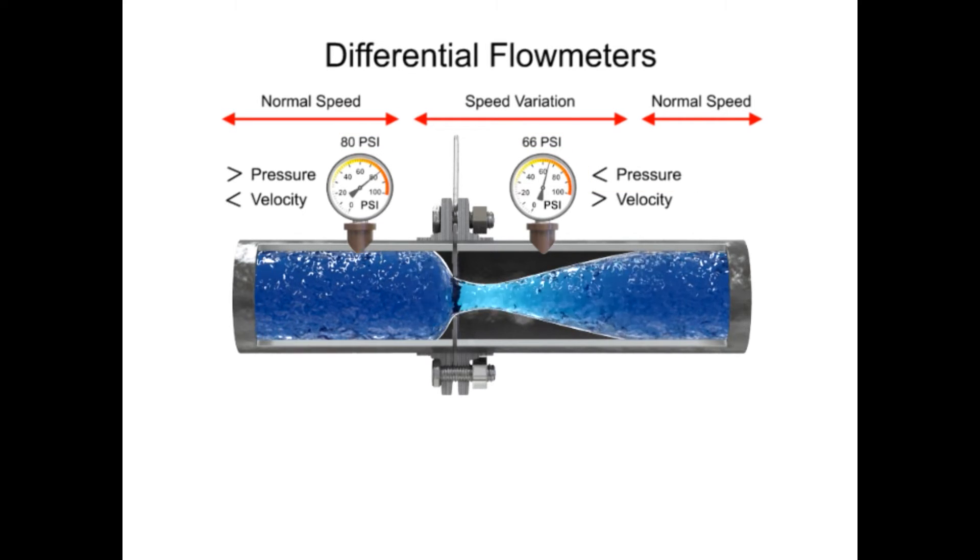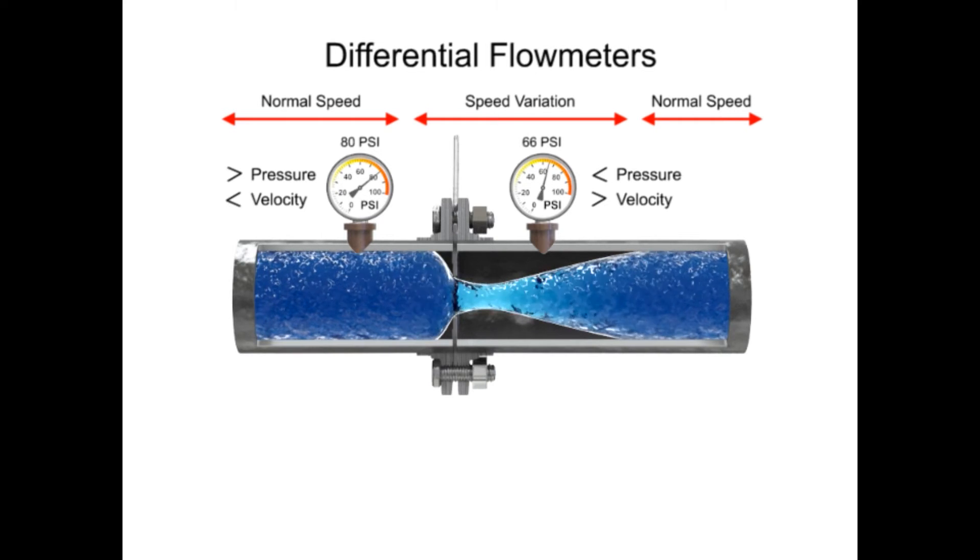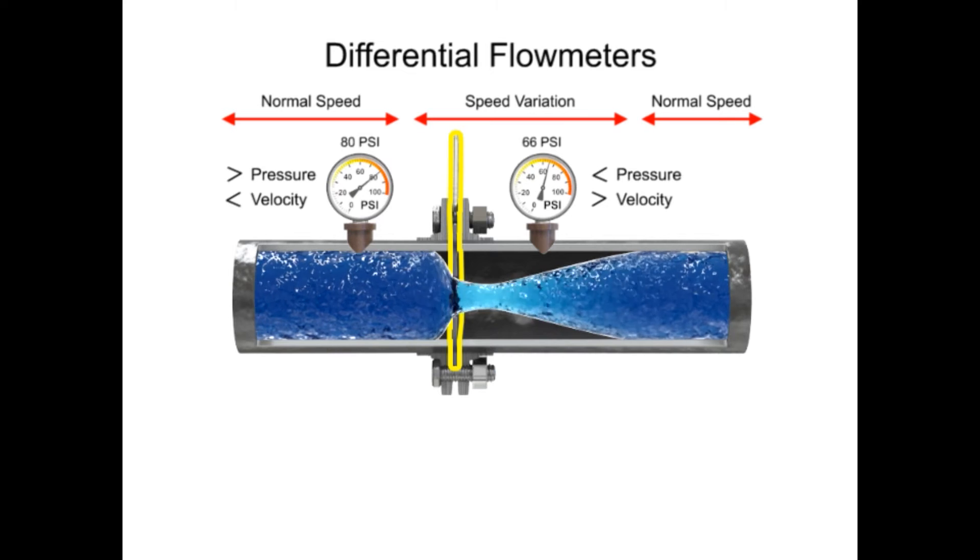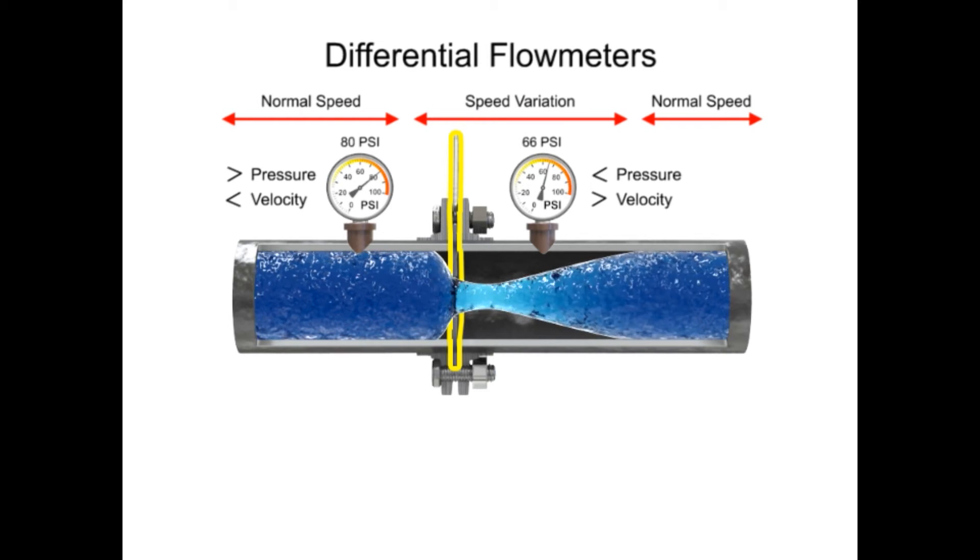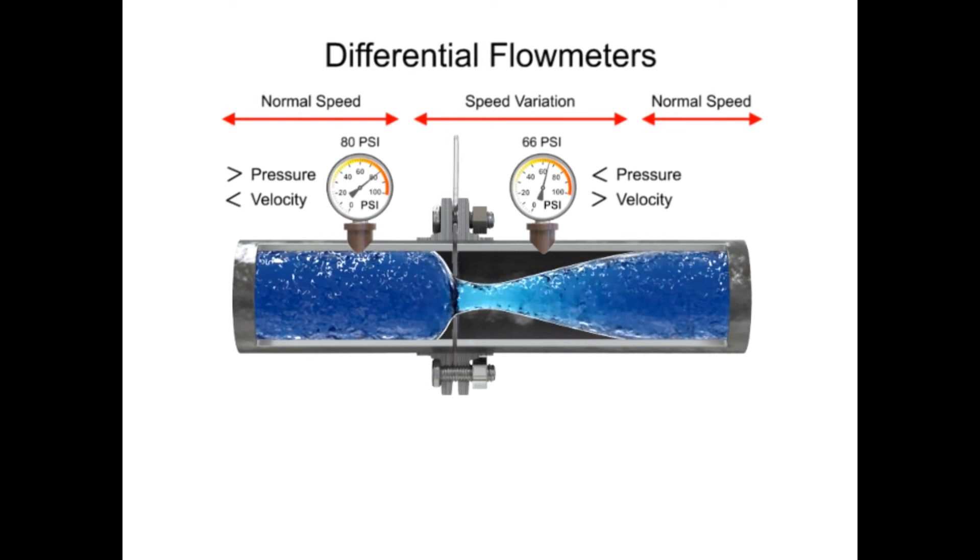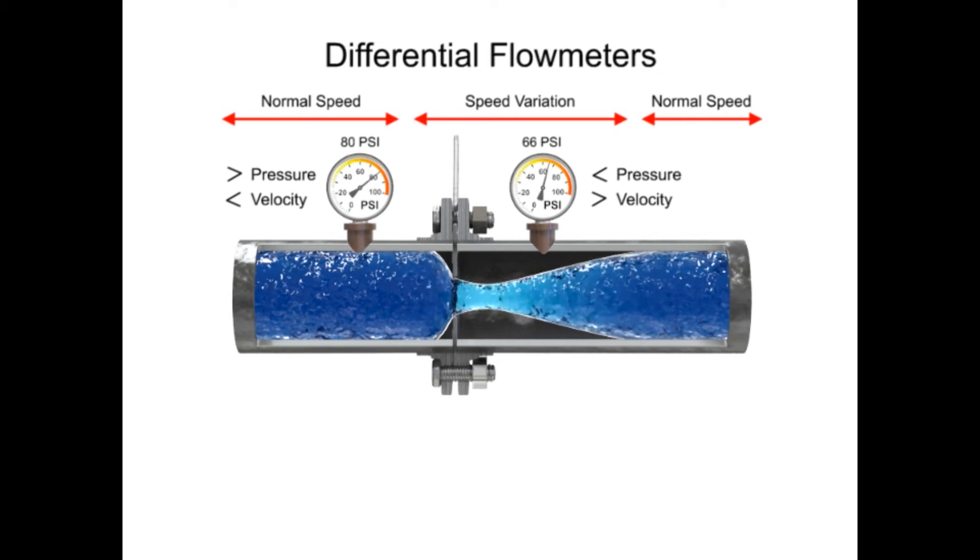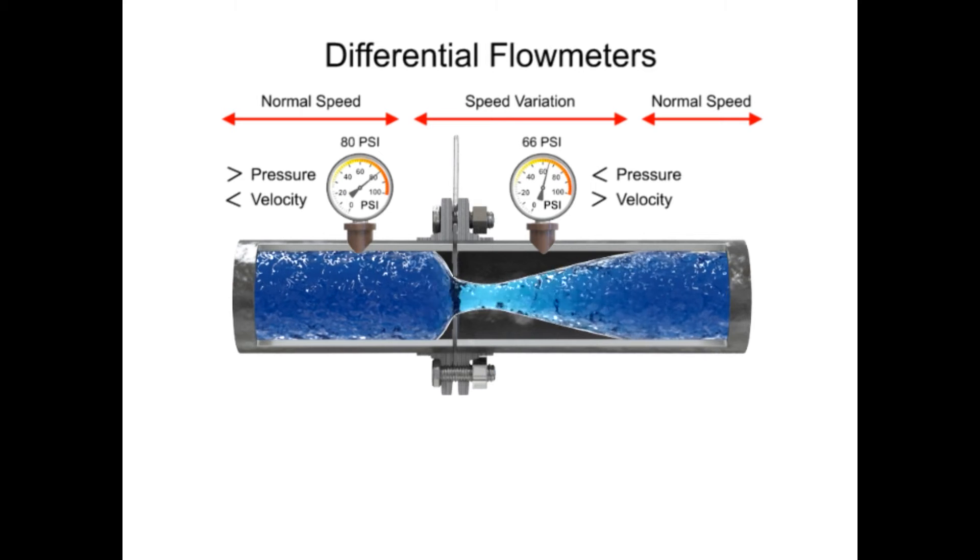As the fluid flow rate increases through the pipe, back pressure on the incoming side increases due to the restriction of flow created by the orifice plate. The pressure of the fluid at the downstream side of the orifice plate is less than the incoming side due to the accelerated flow.